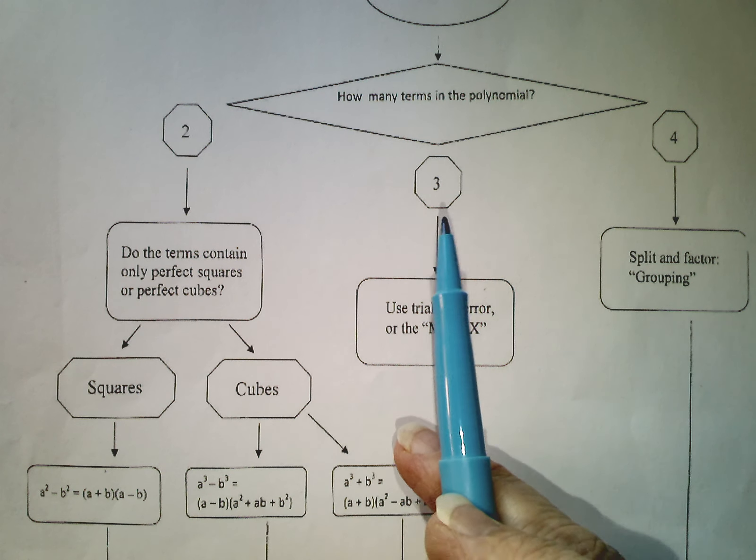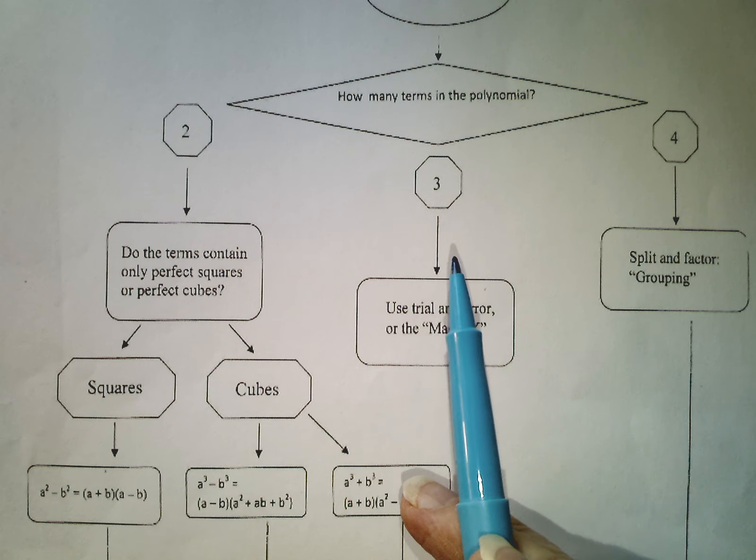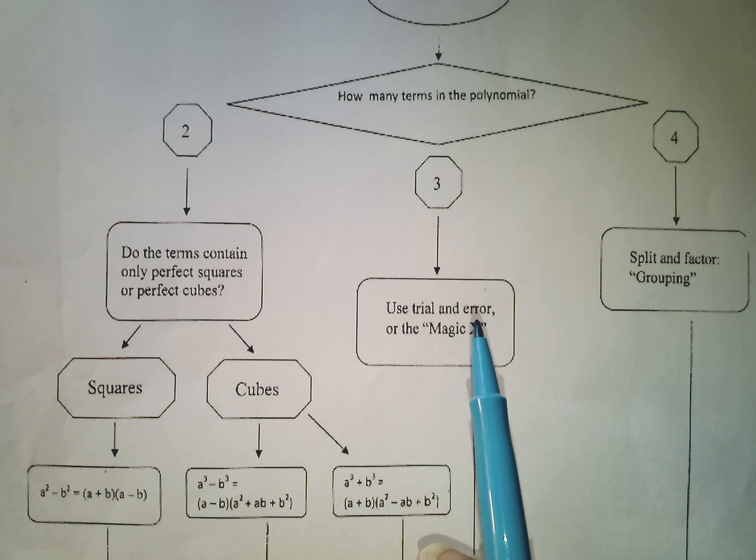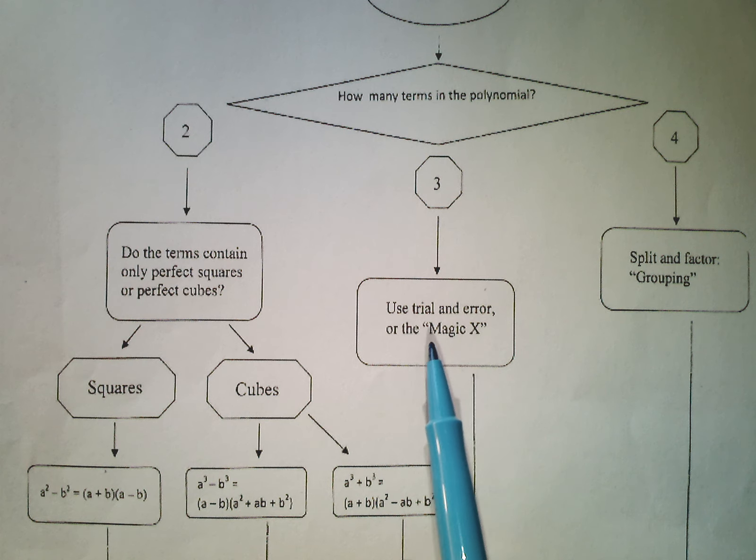If there are three terms, good old trinomial, we're going to work on that today. You can use trial and error. Hopefully you're good with your multiplication tables. Or you may be familiar with the magic X.